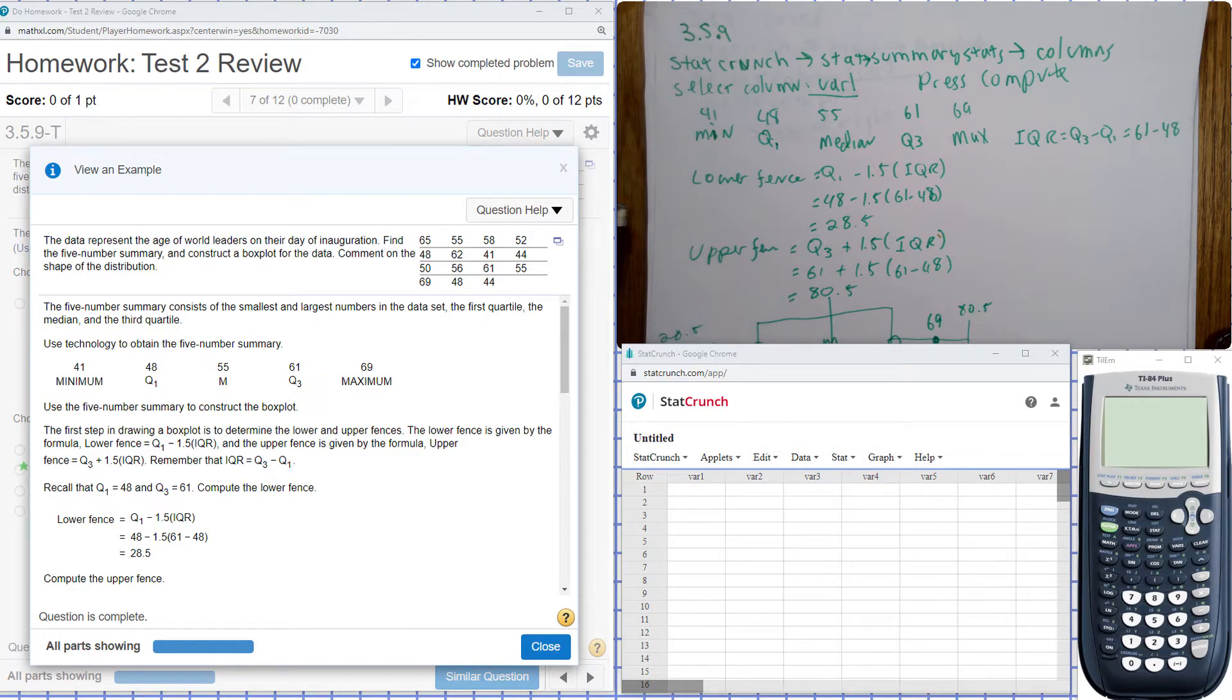This is Chapter 3, Section 5, Problem Number 9. The data represent the age of world leaders on the day of their inauguration. Find the five number summary and construct a box plot for the data. Comment on the shape of the distribution.